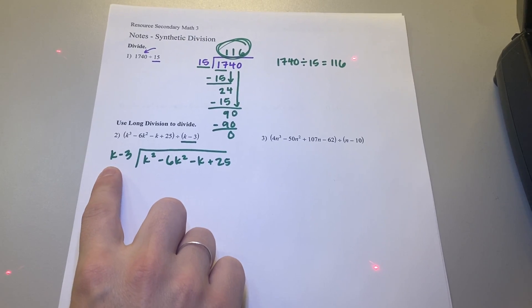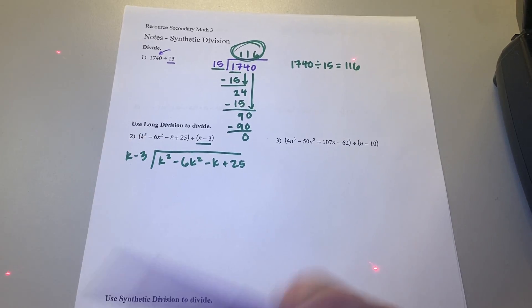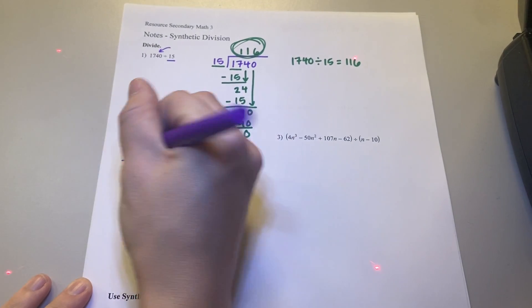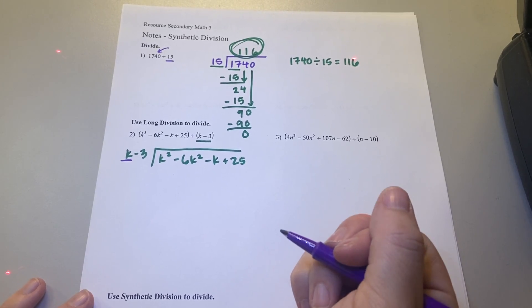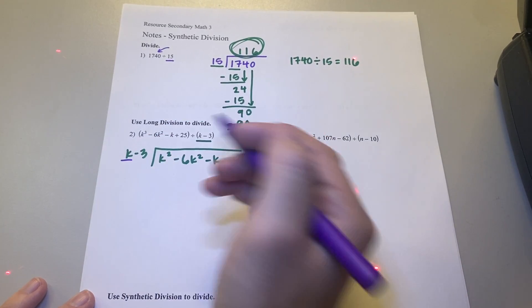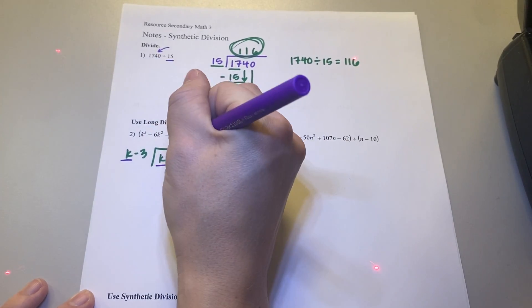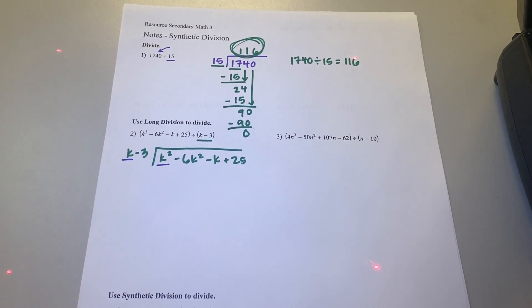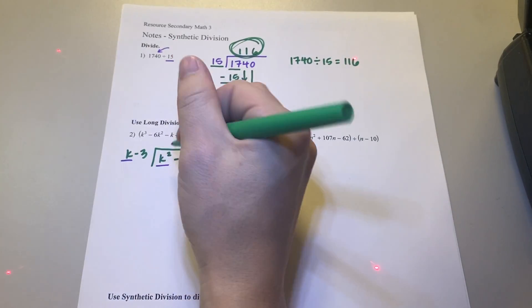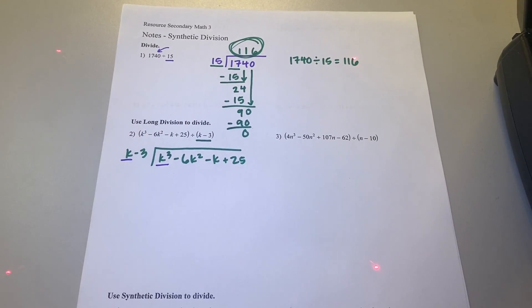Look at K — just our first term, K. I have 1K there. How do I go from 1K to 3Ks? How many more Ks do I need?